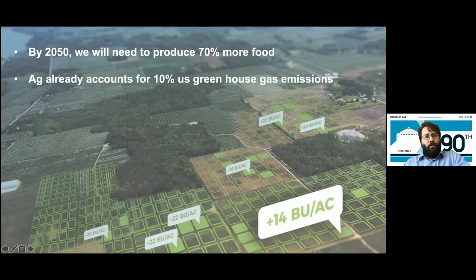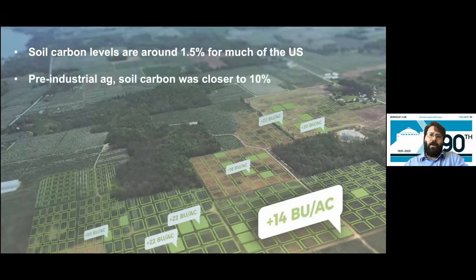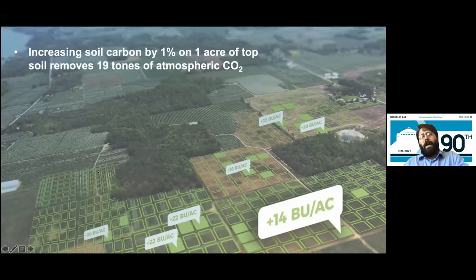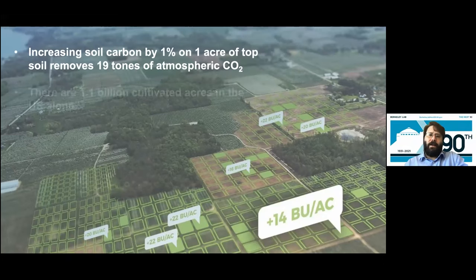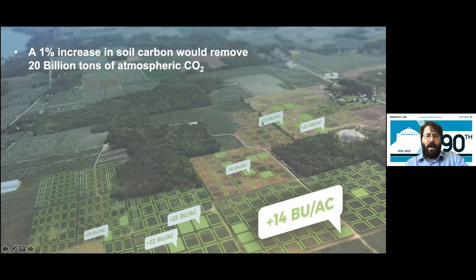However, there's a wrinkle. Agriculture already accounts for 10 percent of greenhouse gas emissions in the United States. Soil carbon levels — how much organic matter is in our topsoil — are around one to one and a half percent for much of the US, down from 10 percent in the 1940s prior to widespread industrial farming. If we increase soil carbon by just one percent on one acre of topsoil, that removes 19 tons of atmospheric CO2. There are 1.1 billion cultivated acres in the US, so a one percent increase in soil carbon would remove 20 billion tons of atmospheric CO2 — about half of our planetary global emissions.